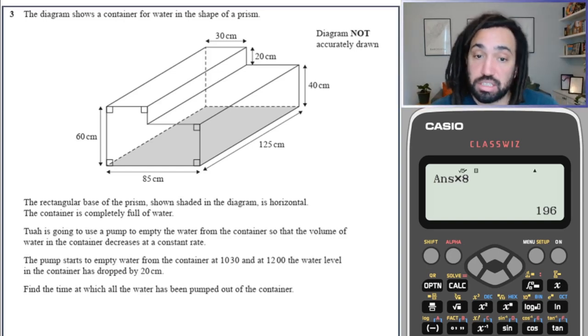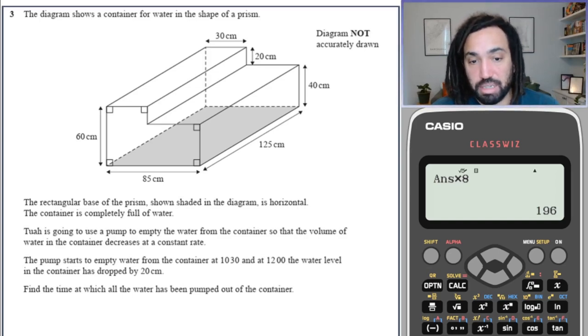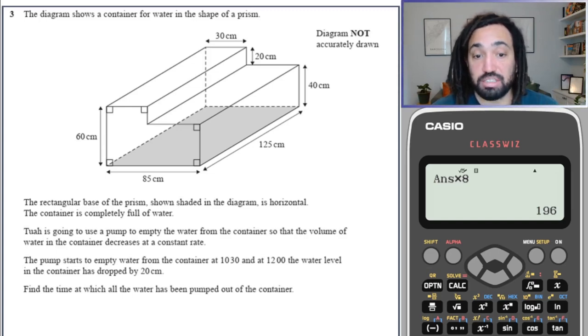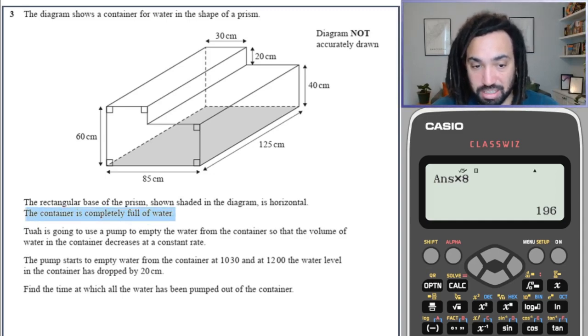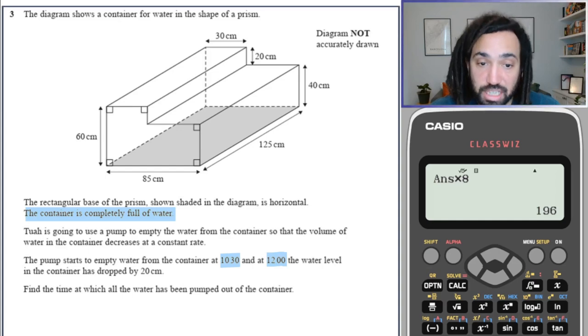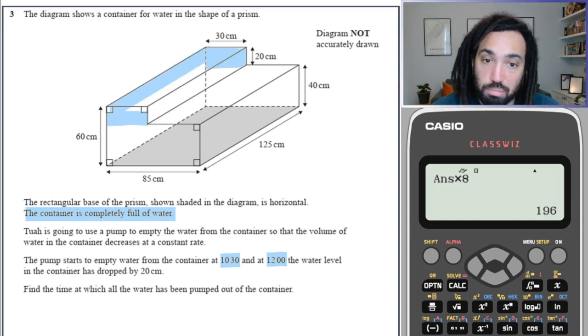Okay, tricky question alert. We've got a strange compound L-shaped prism. And it says the rectangular base of the prism is shown in the diagram as horizontal. The container is completely filled with water. And then Tua is going to use a pump to empty the water from the container so the volume of the water in the container decreases at a constant rate. The pump starts entering the water from the container at 10.30. And at 12 o'clock, the water in the container has dropped down by 20 centimetres, which is really interesting and a bit sneaky because that means that this part of the container has been drained. It's just this top part of the L.